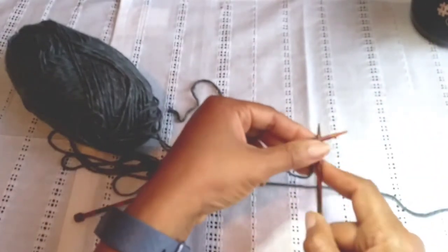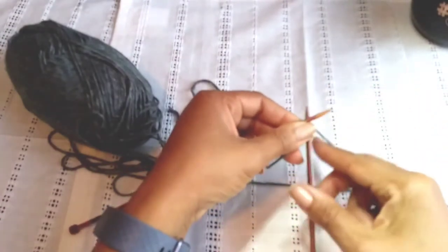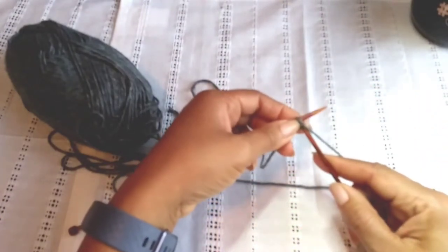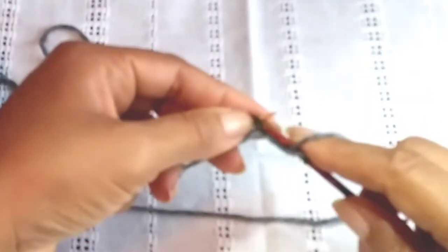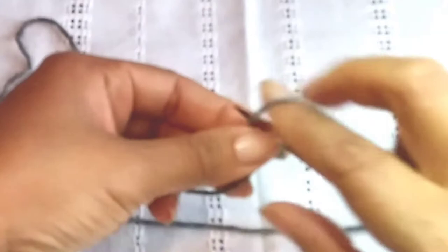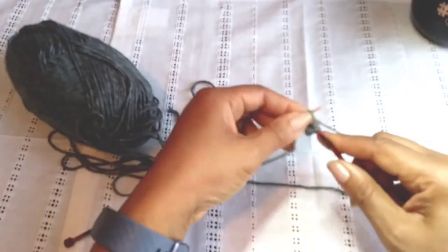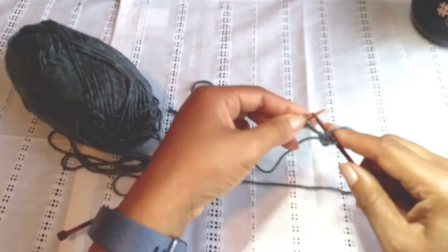First stitch of row one is a knit stitch, followed by a purl stitch, then we knit, purl, knit, purl.